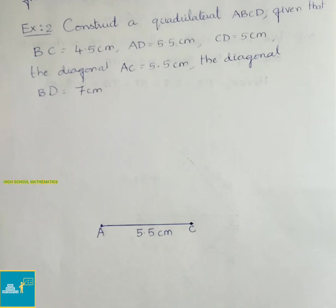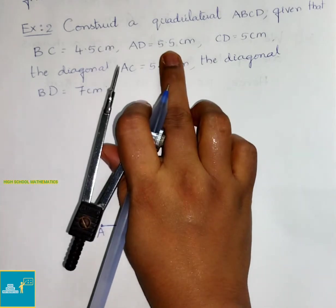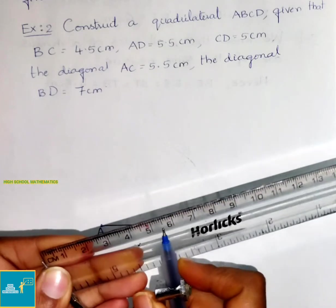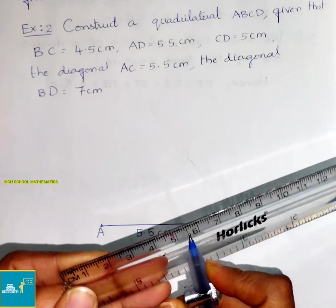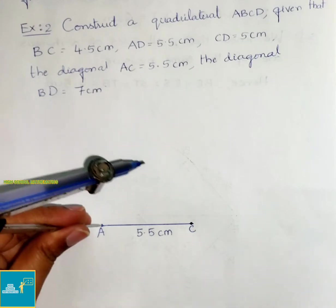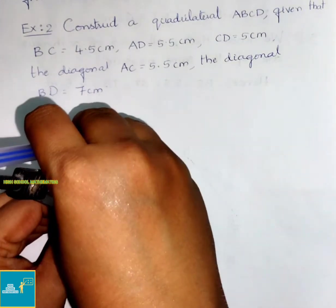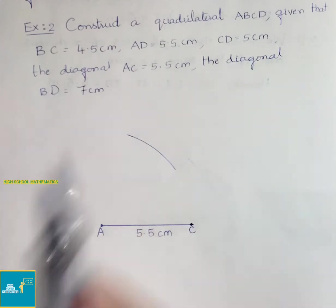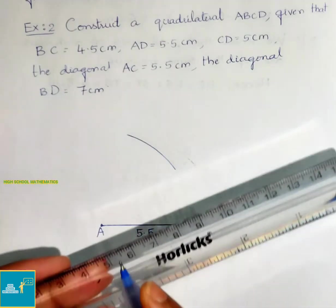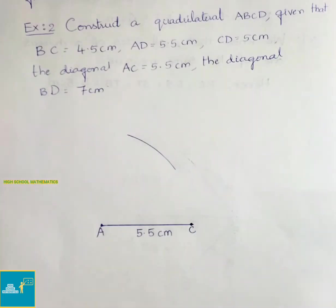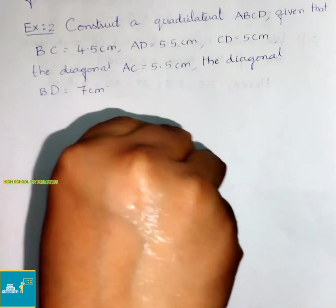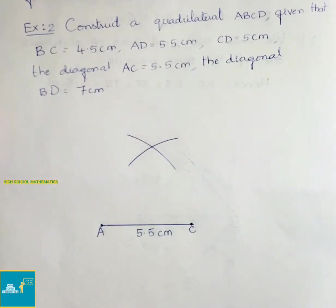With A as center, we shall draw a 5.5 cm arc. Next, with C as center, we shall draw a 5.5 cm arc that coincides with the previous arc. Now mark this point as D.